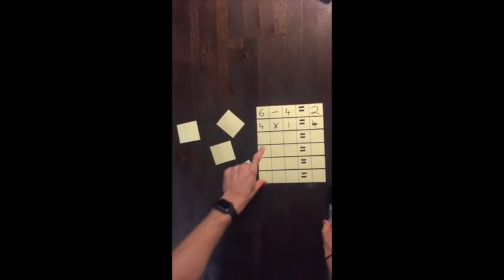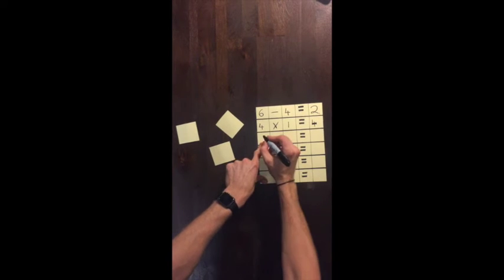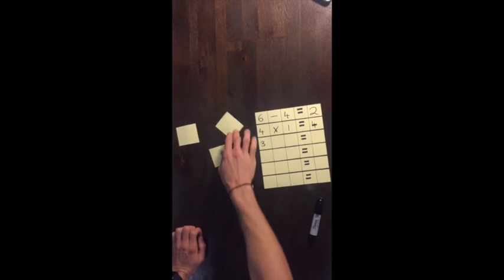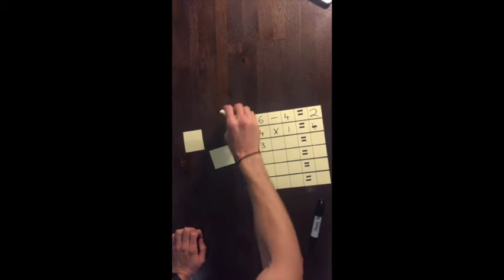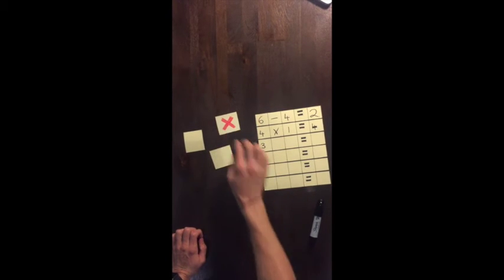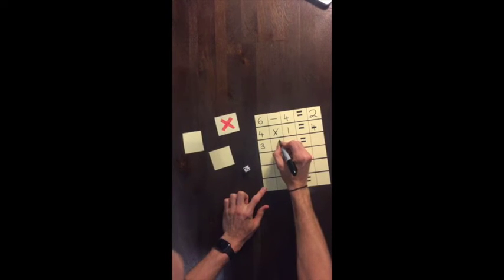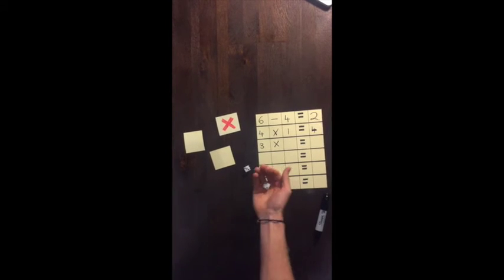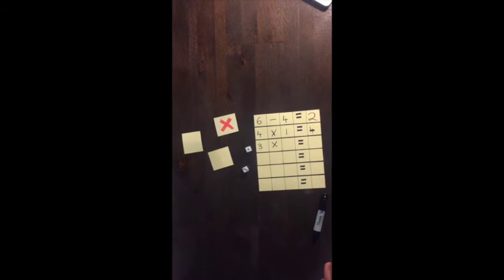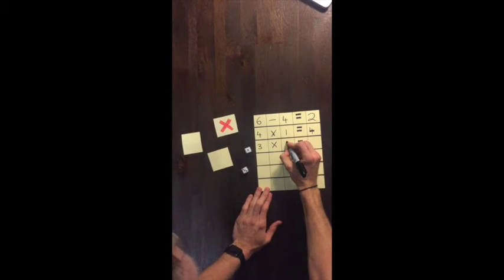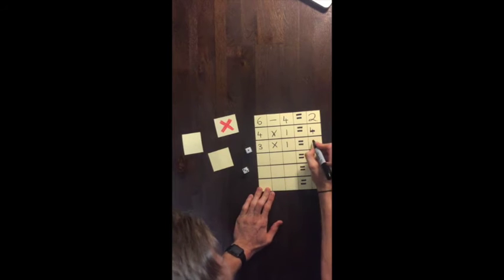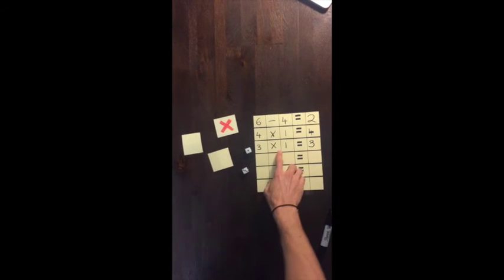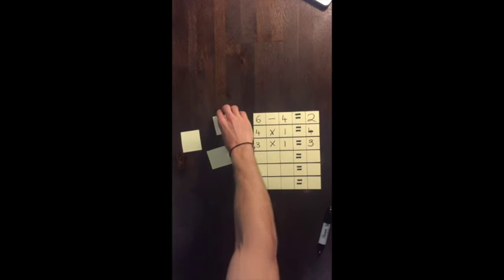Three — so a three goes in the first box. We choose an action card and we get another multiplier. We roll our second dice and get a one. Three times one equals three.